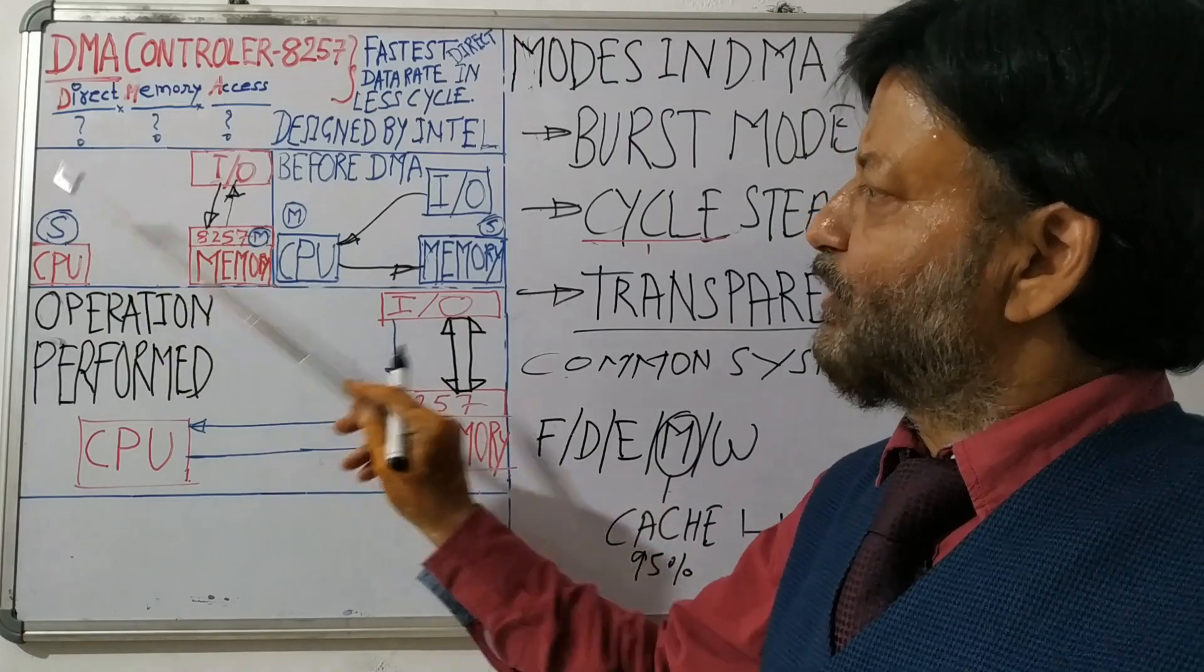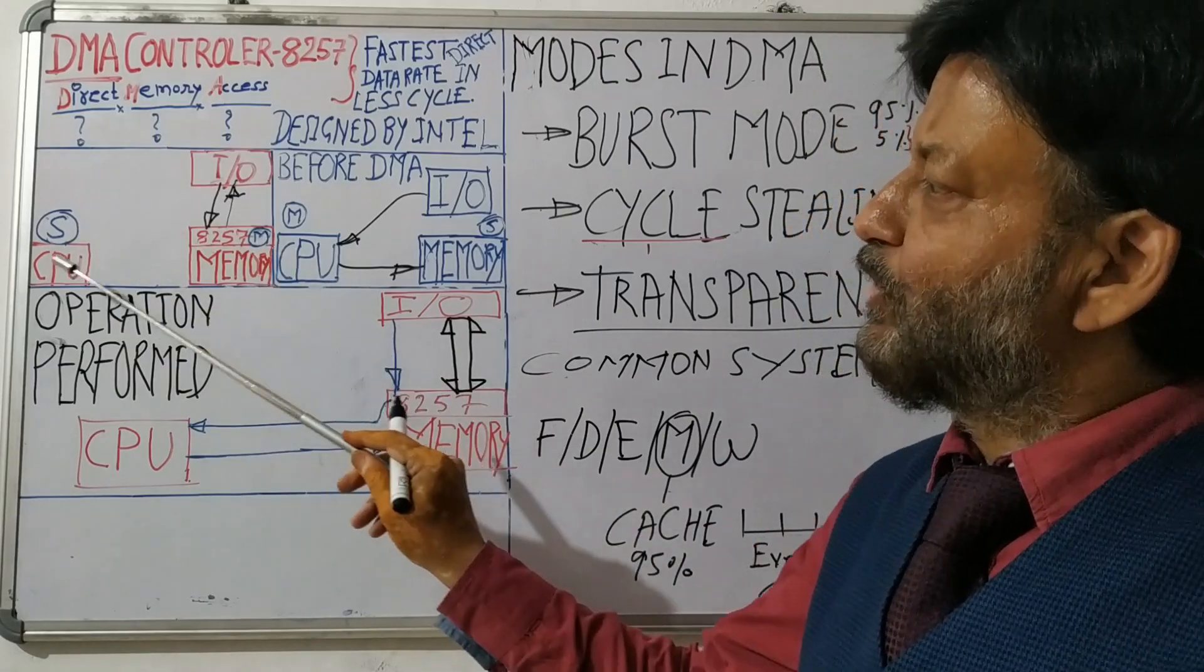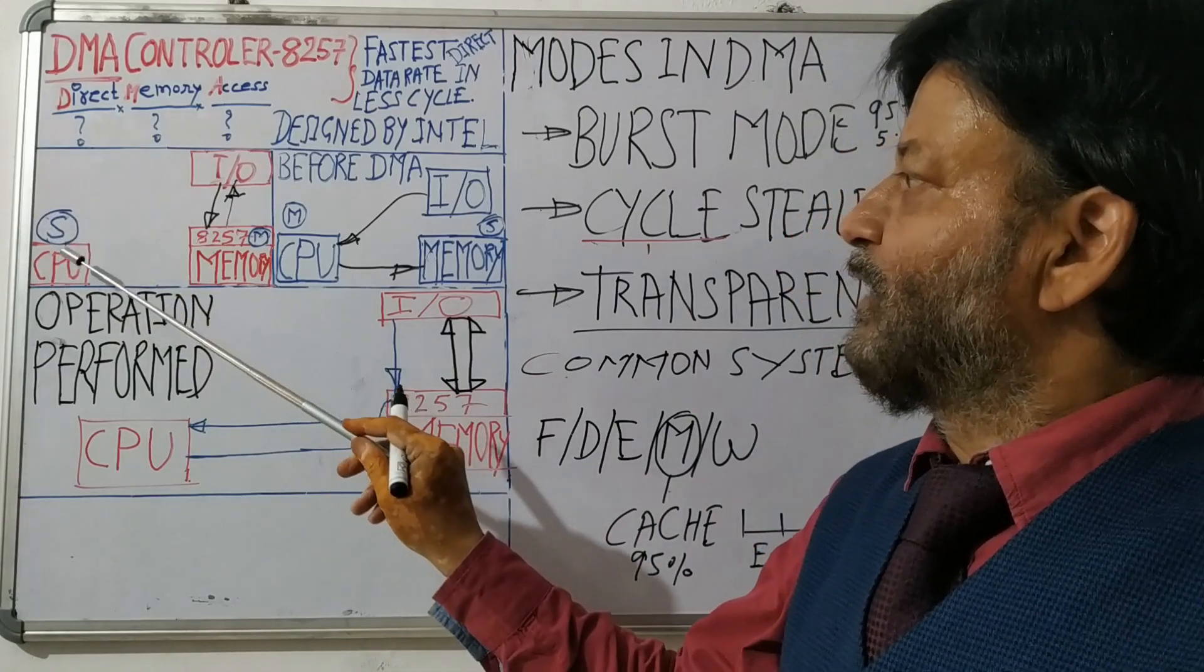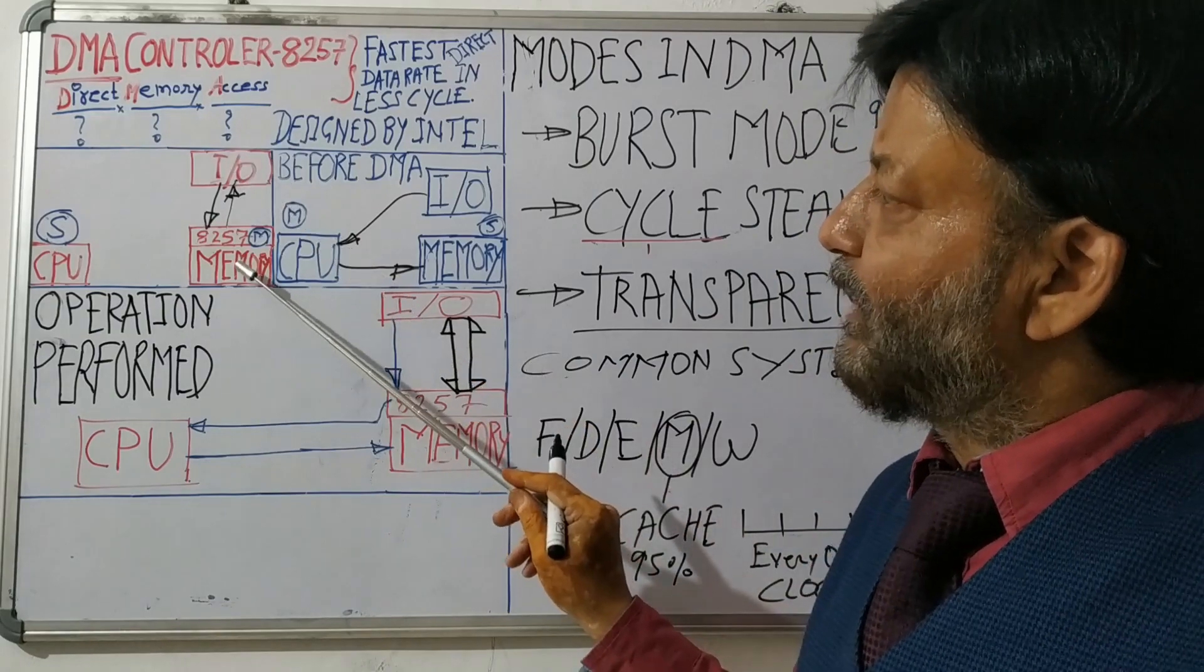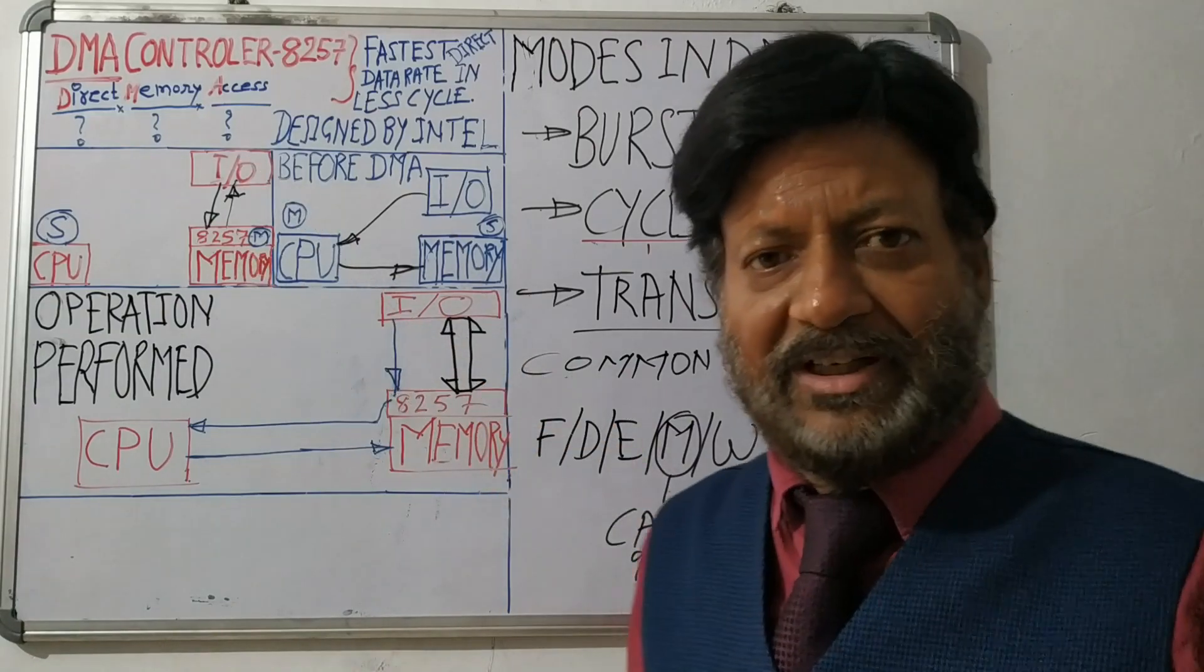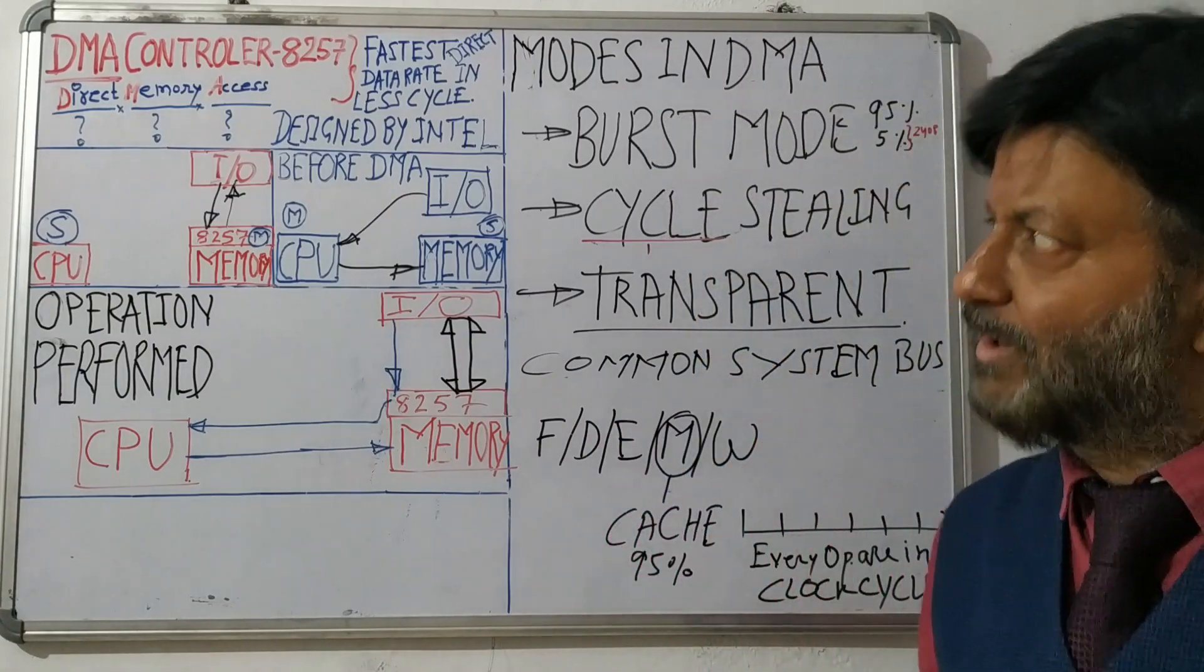So memory is master, CPU is slave. Now what is happening? CPU can do other work. In that time, memory independently works or independently deals with input output devices that are peripheral.